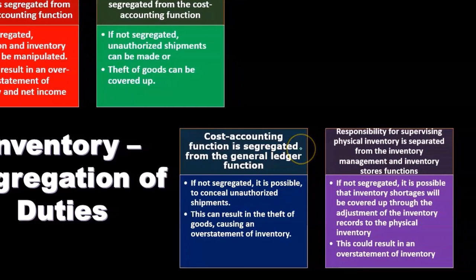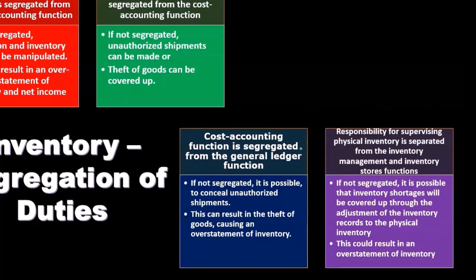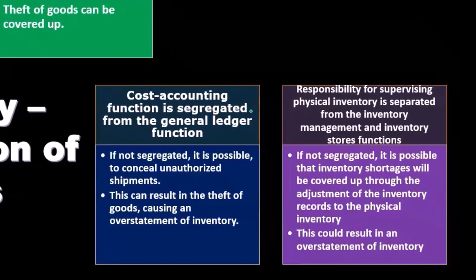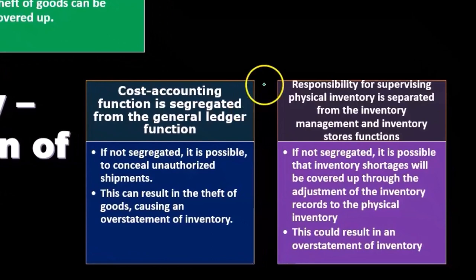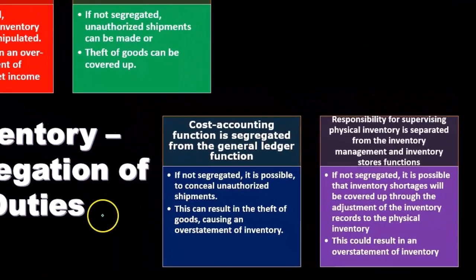The responsibility of supervising physical inventory is separate from the inventory management and inventory stores function. If they weren't segregated, it's possible that inventory shortages will be covered up through adjustment of the inventory records to the physical inventory. This could result in an overstatement of inventory.